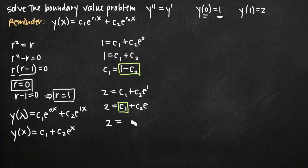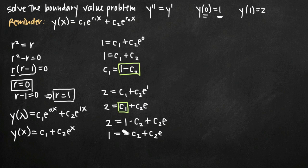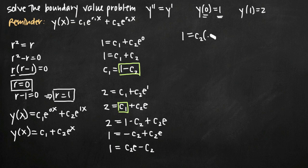Substituting gives us 2 = (1 minus c₂) + c₂e. Subtracting 1 from both sides gives 1 = negative c₂ + c₂e, which we rewrite as 1 = c₂e minus c₂. Factoring out c₂ gives 1 = c₂(e minus 1). Dividing both sides by (e minus 1) gives us c₂ = 1 over (e minus 1).